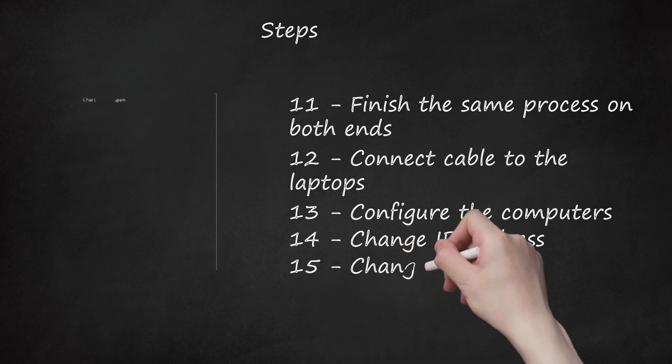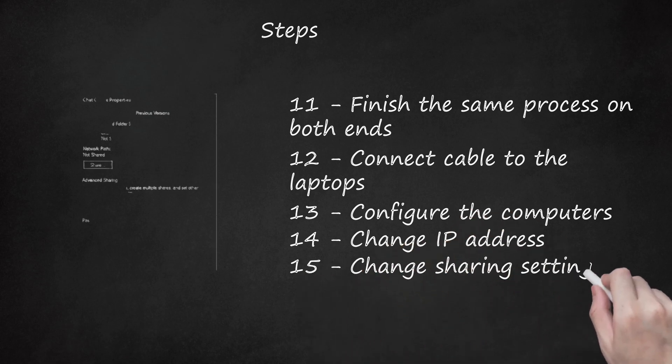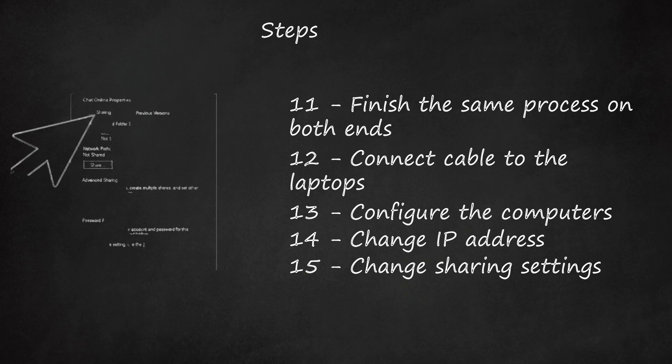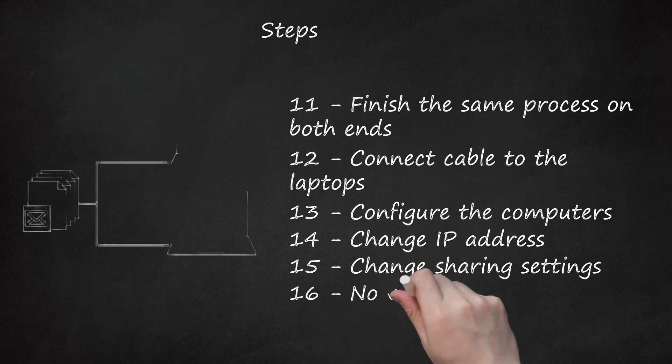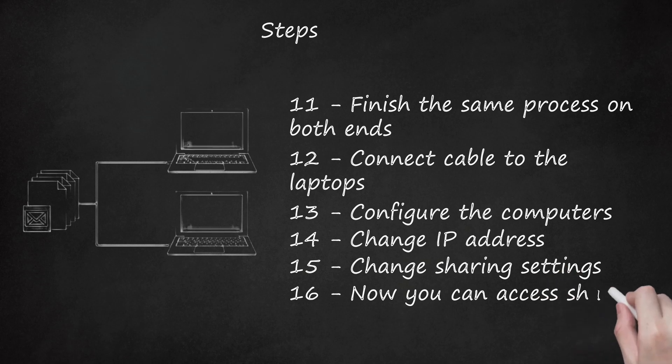Step 15: Change sharing settings. To share the information and resources, we need to change some settings. Select Computer from the Start menu and select Properties of the folder that you want to share by right-clicking. Step 16: Now you can access shared files.